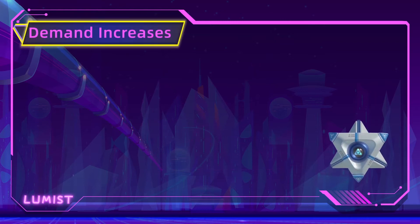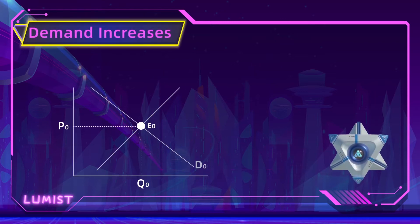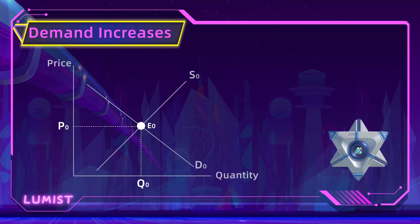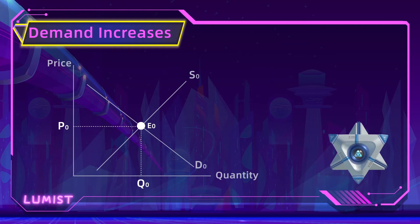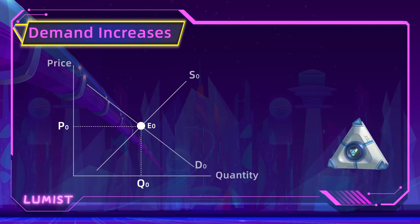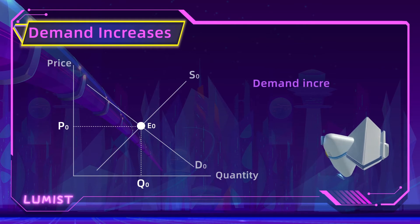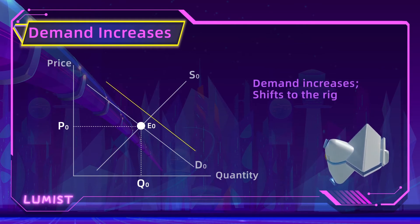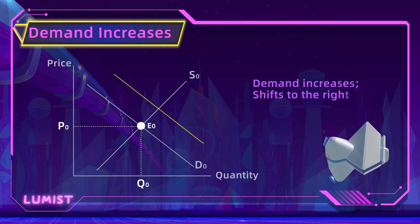Let's start with something easy — one curve moving at a time. First, let's assume that consumers now have a stronger preference for a good, or maybe there are just more consumers in this market. Regardless, this means that demand increases and thus it shifts to the right.